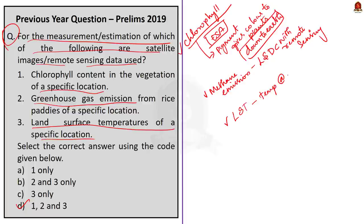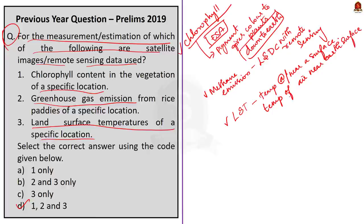Statement 3 is also correct. Land surface temperature refers to the temperature at or near a surface — specifically it may refer to surface air temperature, the temperature of the air near the surface of the earth. Scientists monitor land surface temperature because the warmth rising from earth's landscapes influences our world's weather and climate patterns. So the correct answer for this question is option D — 1, 2 and 3.